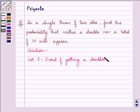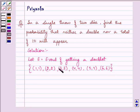That will have elements (1,1), (2,2), (3,3), (4,4), (5,5), and (6,6). That means there are 6 elements in it. So n(E), the number of elements in E, is equal to 6.